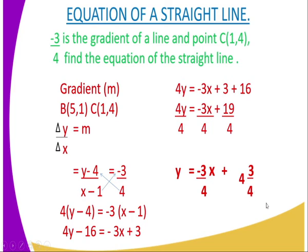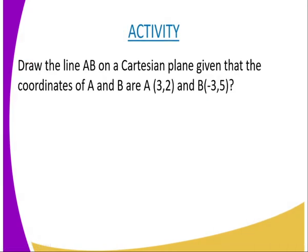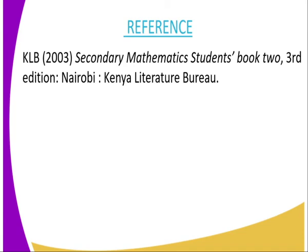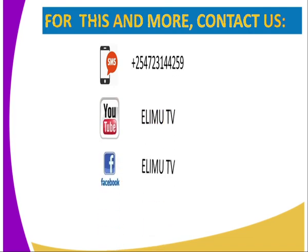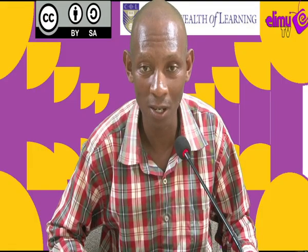We have come to the end of today's lesson. For your assignment, draw line AB on a Cartesian plane given that the coordinates are A(3, 2) and B(-3, 5). For reference, you can refer to Secondary Mathematics Student Book Two, published by Kenya Literature Bureau. For more information you can reach us at Elim TV using the addresses shown on screen, including Twitter at ElimTV_KE. Thank you for joining me — until next lesson, bye-bye.